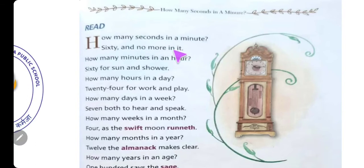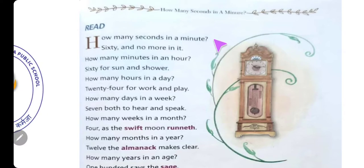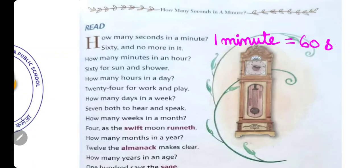'60 and No More In It' — N-O No का मतलब नहीं, M-O-R-E More मतलब ज़्यादा, In It. So 1 Minute में 60 Seconds होते हैं। 'And No More In It' मतलब इससे ज़्यादा नहीं — 60 से ज़्यादा नहीं होते हैं। So 1 Minute is equal to 60 Seconds.